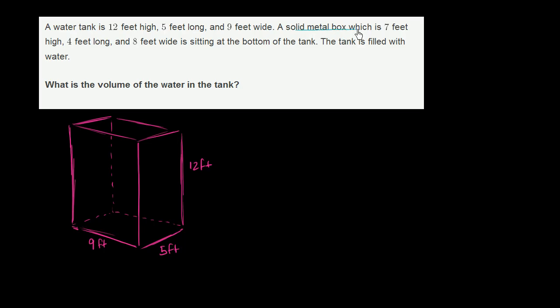And then they say there's a solid metal box, which is 7 feet high, 4 feet long, and 8 feet wide, sitting at the bottom. So let's see if I can draw that. So let's say it's 4 feet long, 7 feet high. 4 feet might look something like this. It's 7 feet high, which might look something like that. Obviously, I'm not drawing it perfectly to scale. 7 feet high and 8 feet wide. So it might look something like this as it's sitting in this tank. So this is that metal box. And they say it's a solid metal box. It's not like any water can fit in here. So this is a solid metal box.